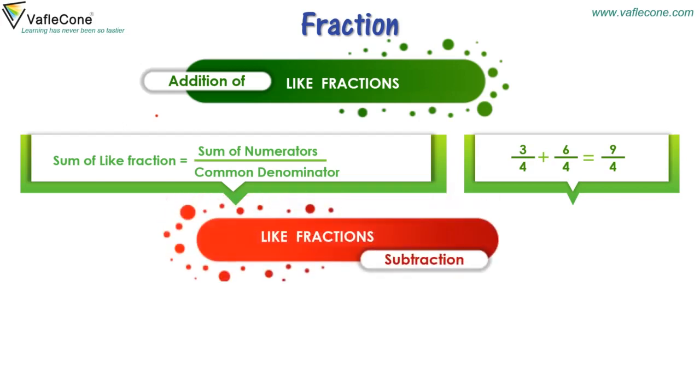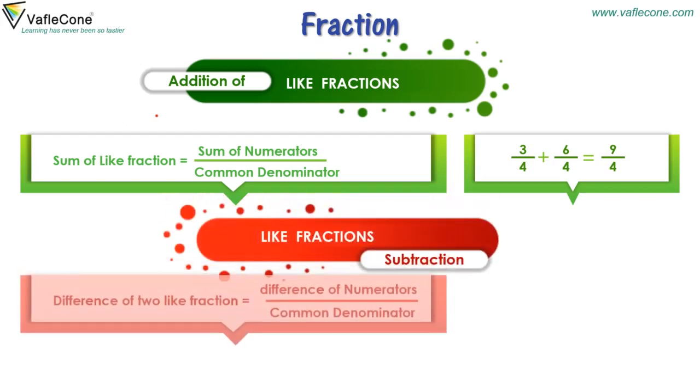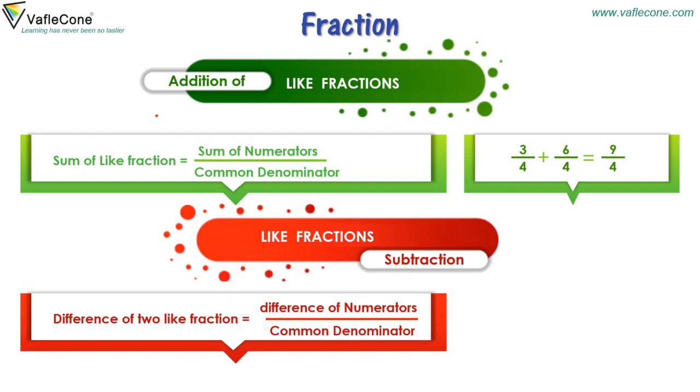Like fractions subtraction: difference of 2 like fractions is equal to difference of numerators by common denominator. Example: 6 by 4 minus 2 by 4 equals 3 by 4.